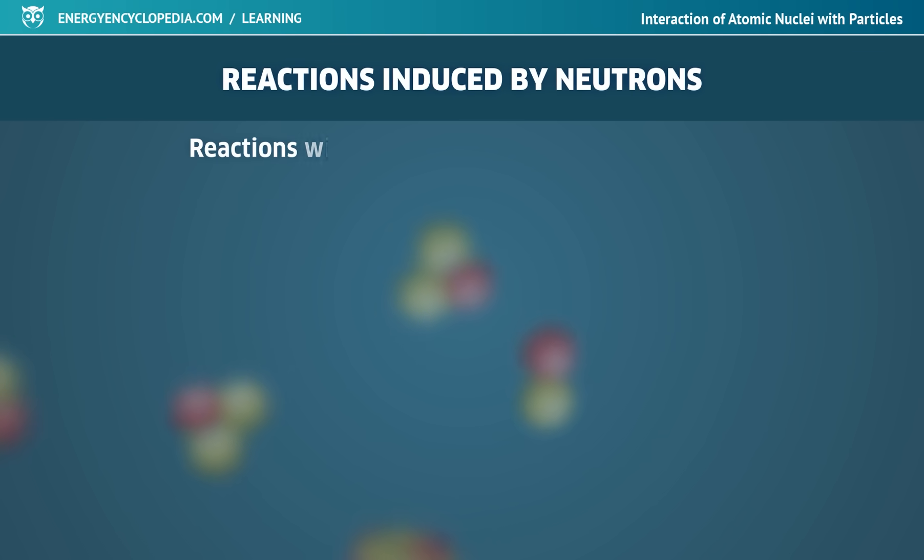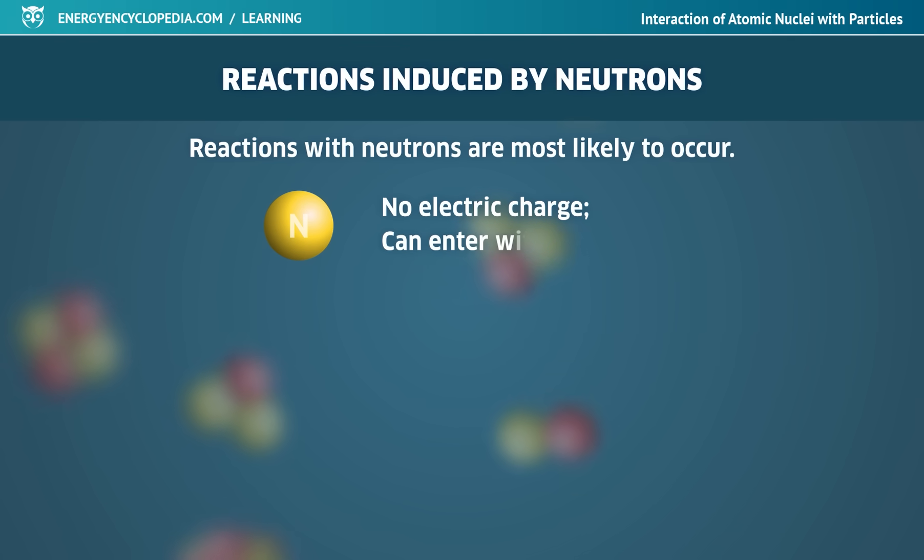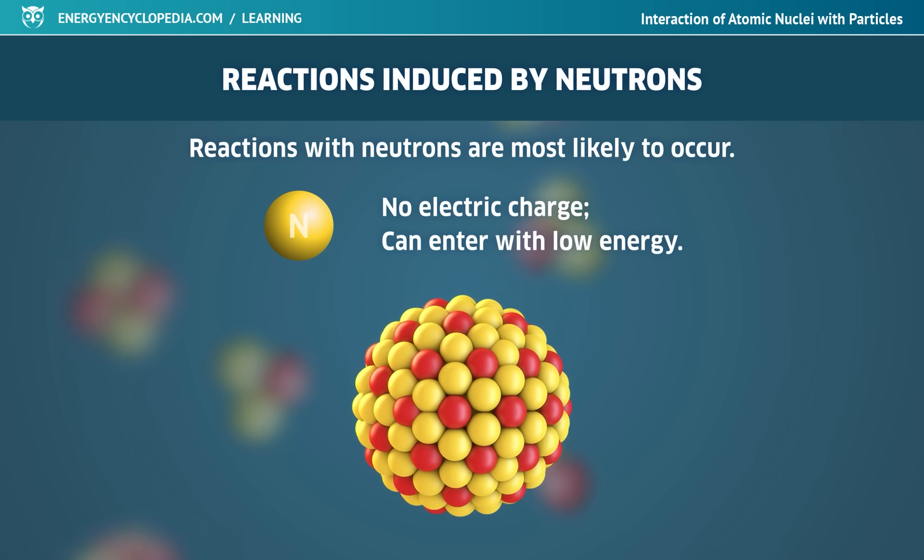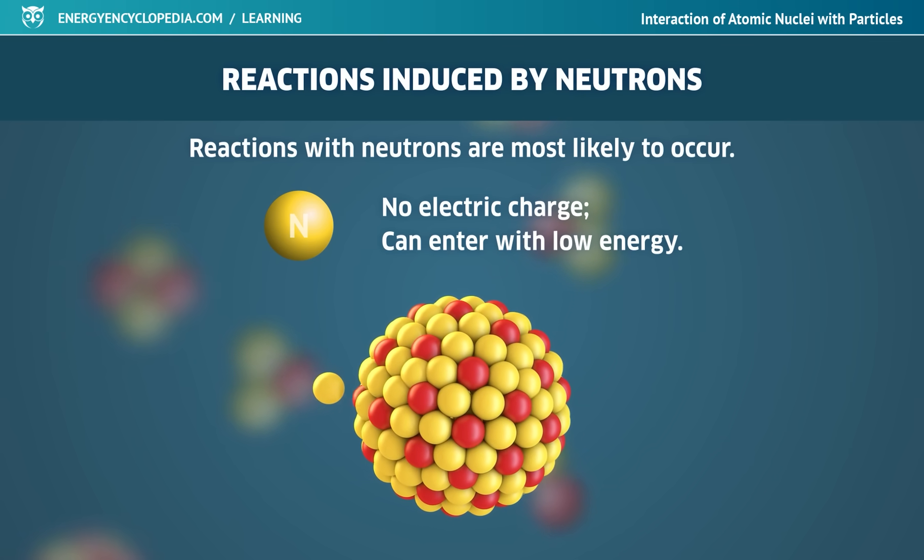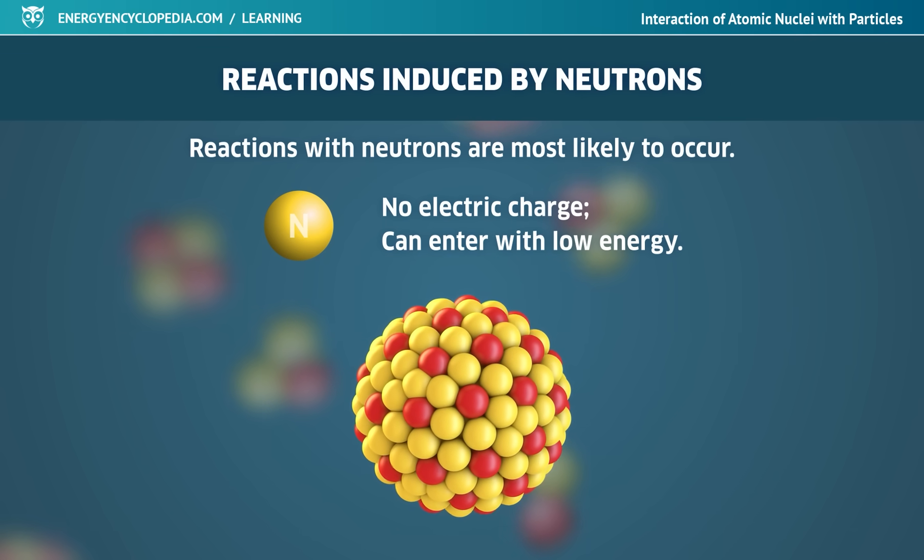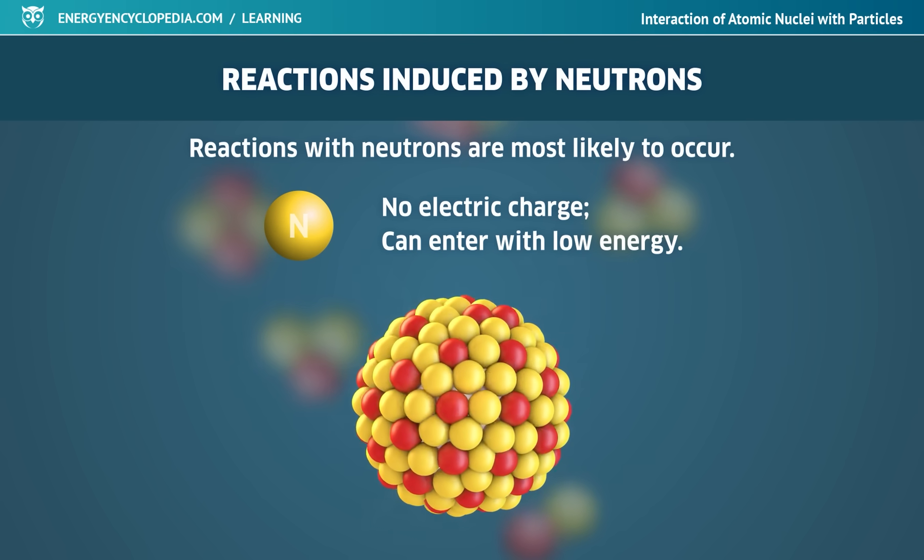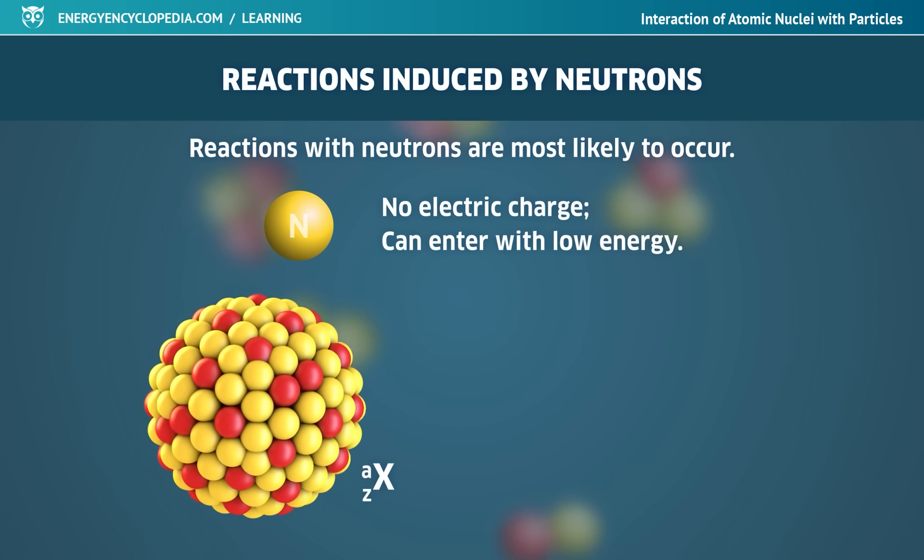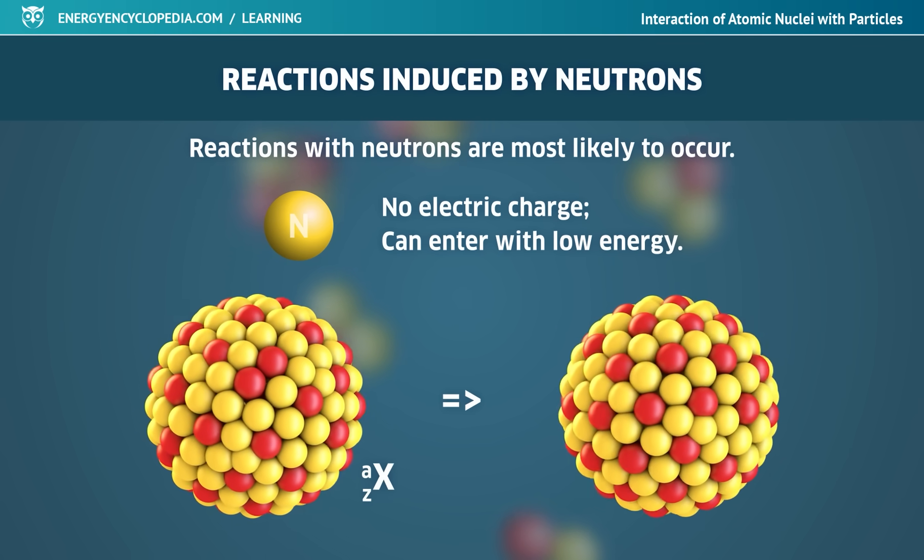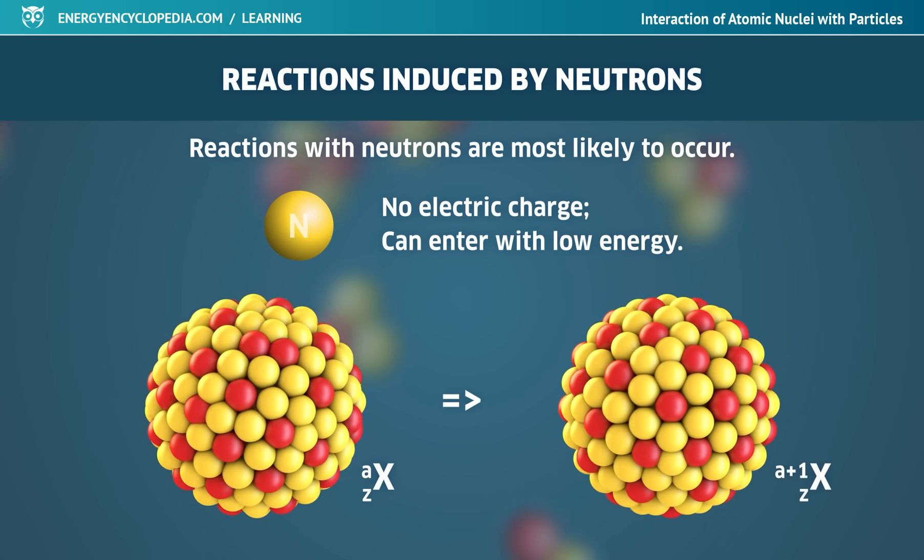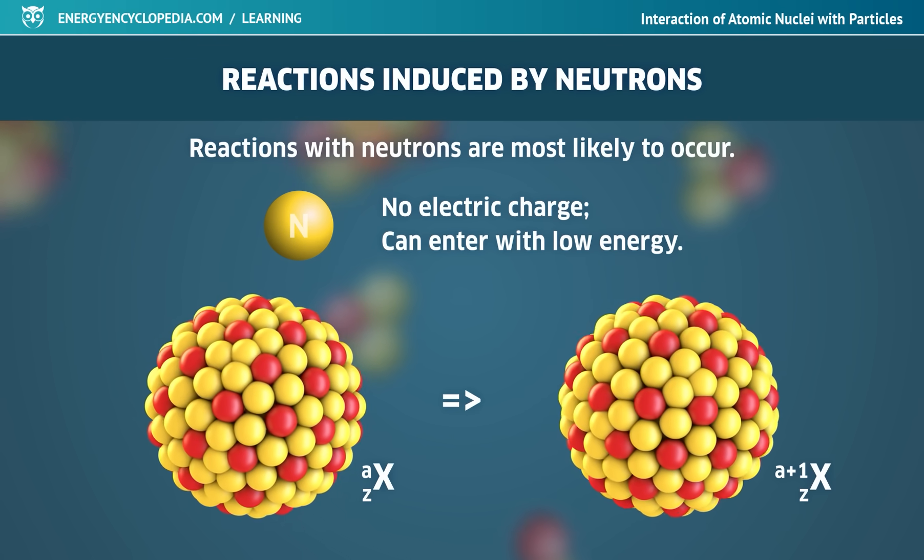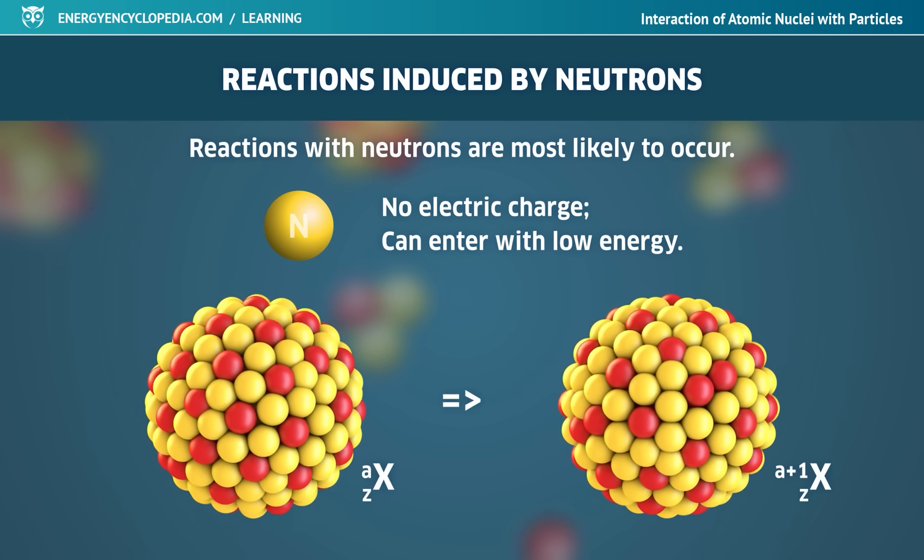Reactions in which nuclei are bombarded with neutrons take place most readily. A neutron has no electric charge and therefore is not repelled by the nucleus and can enter it even with a relatively low energy. The basic neutron reaction is the simple radiative capture of a neutron by a nucleus. It is called radiative because the newly formed compound nucleus passes from an excited to a normal state by emitting a photon. One neutron will be added to the new nucleus, so an isotope of the same element will actually be formed. Isotopes created by the radiation capture of a neutron often undergo beta-radioactive transformation.